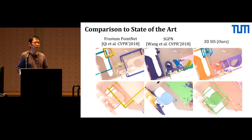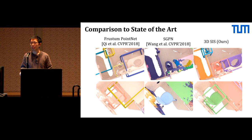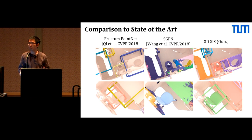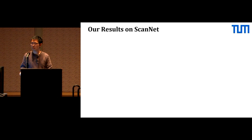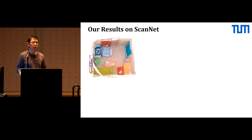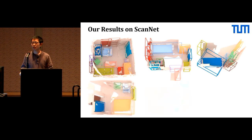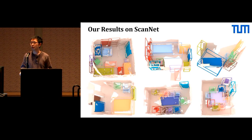We show visual results compared to the state-of-the-art. Compared to the frame-based method on the left, we have more accurate bounding box predictions. Compared to the bottom-up method SGPN in the middle, we have less jittered segmentations. We achieve accurate instance segmentation across common 3D objects like chairs and desks.